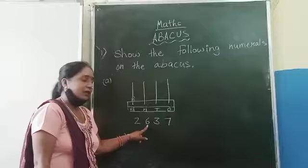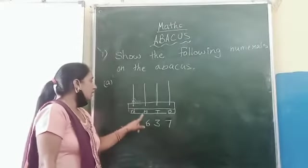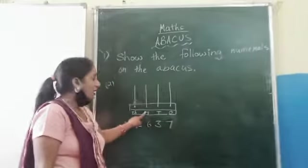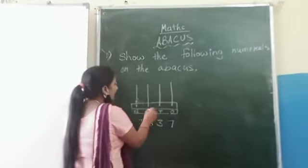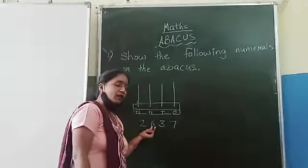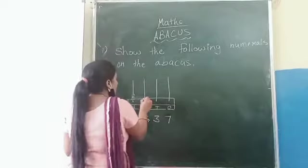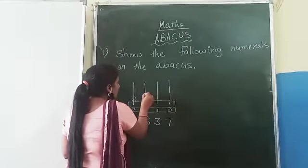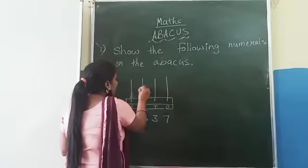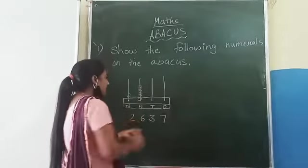Step 2: 6 is in the 100 place. Therefore there are 6 beads in the 100 place. 1, 2, 3, 4, 5, and 6.